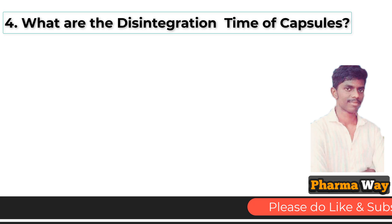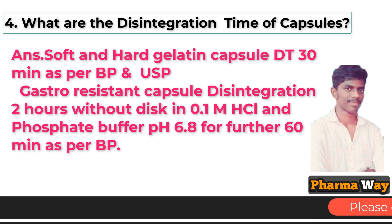What are the disintegration times of capsules? Answer: Soft and hard gelatin capsules — disintegration time is 30 minutes as per BP and USP. Gastro-resistant capsules — disintegration time is 2 hours without disc in 0.1 molar HCl, and phosphate buffer pH 6.8 for a further 60 minutes as per BP.